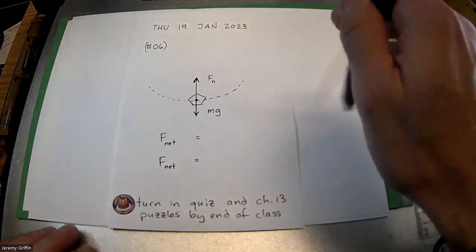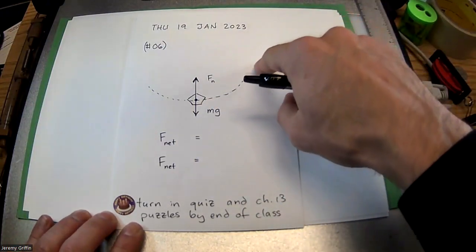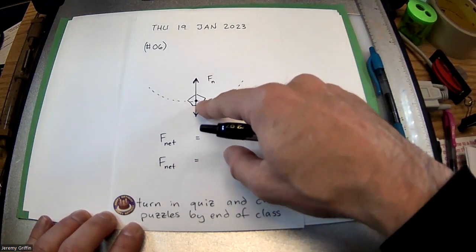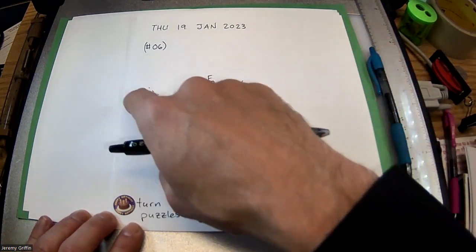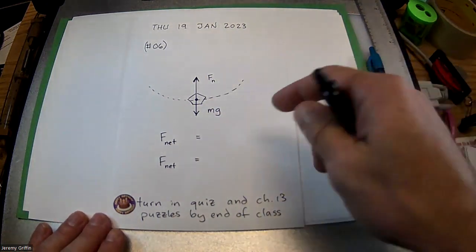There's a Ferris wheel that's going on. And right at the bottom, as it's turning, would you feel really heavy or really light right at the bottom? Really heavy, right? Because there's a centripetal force going on.